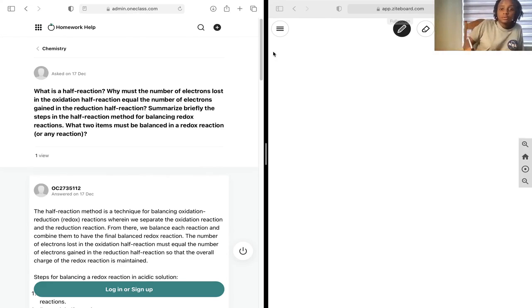The half reaction method is an algorithm that helps us balance out redox reactions.